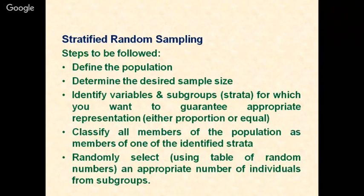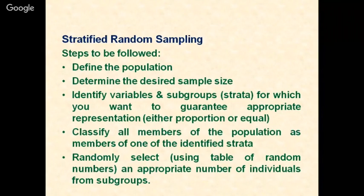The steps followed in stratified random sampling are: define the population, determine the desired sample size, identify the variables or strata — such as gender, socioeconomic status, or culture — for which you want to guarantee appropriate representation. You can go for proportional or equal allocation. Classify all members of the population as members of one of the identified strata, then randomly select an appropriate number of individuals from each subgroup using a table of random numbers.